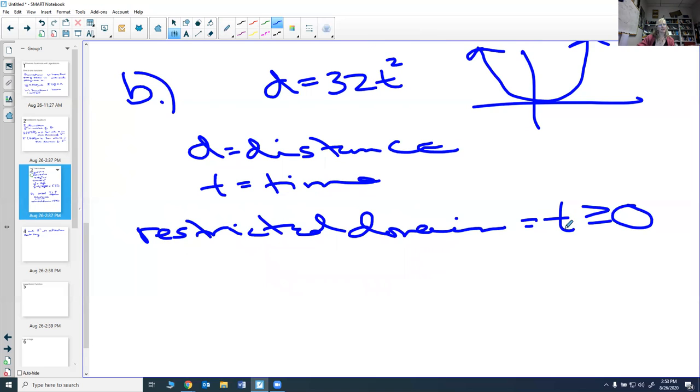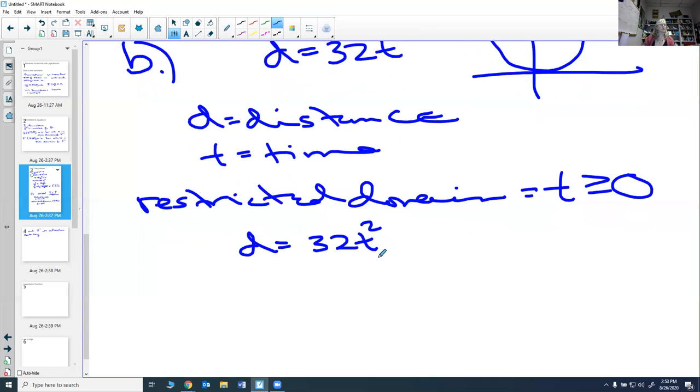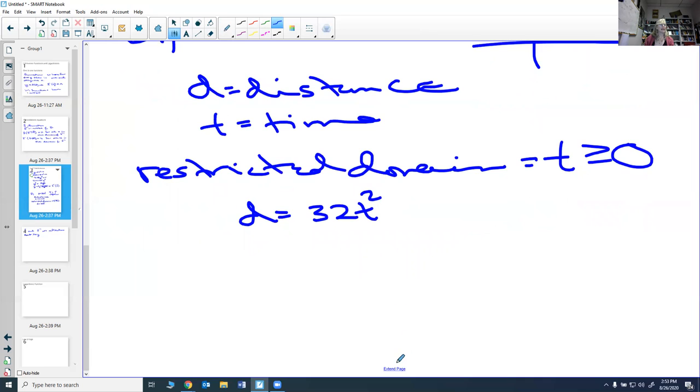The reason I do that is because if t is time, time can't be negative, so we're going to make sure that time is greater than or equal to zero. That being the case, I can now find the inverse. So a lot of times when we don't have inverses, we do what we call restricted domain, so we can make it one-to-one and then we can work through it.